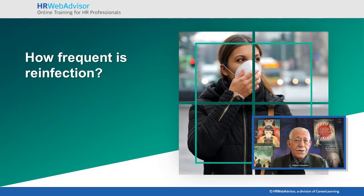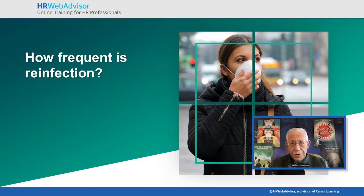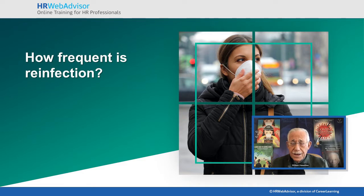If you go back even earlier to studies of coronaviruses into the 70s, there were experiments where large groups were exposed to a purified strain of coronavirus, waited a year, were re-exposed, and were reinfected, and had the same symptoms they had before.